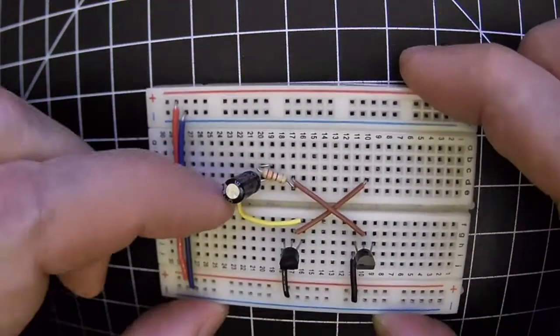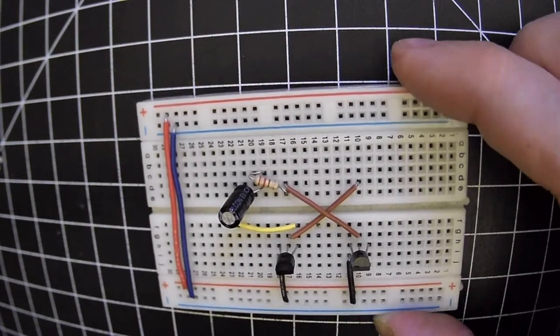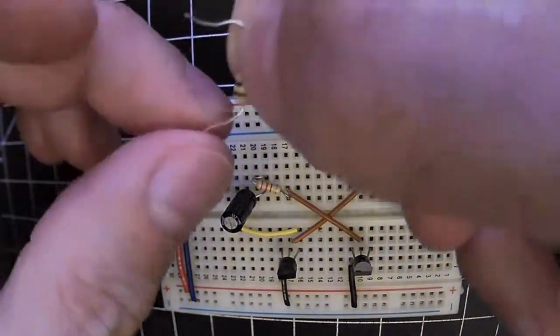The other place that this negative leg of the cap is connected is through a 1k resistor to the red rail.